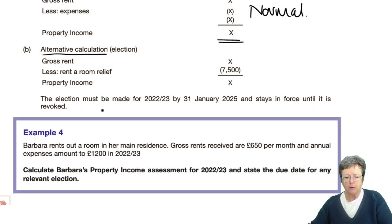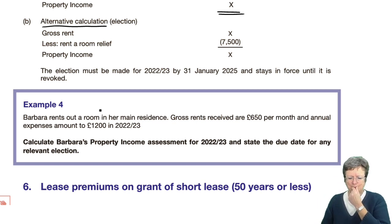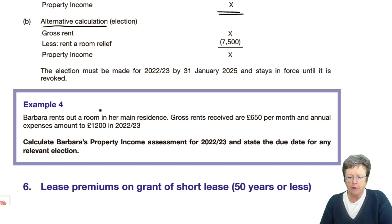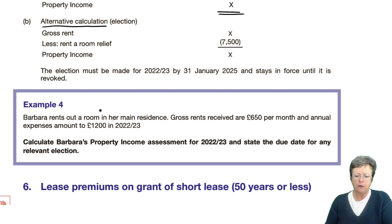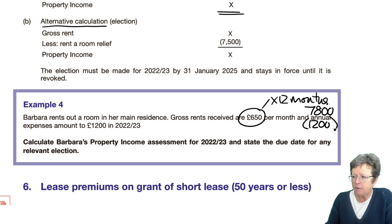Let's have a look at example number four. Barbara rents out her room in her main residence. Gross rents are £650 a month. Annual expenses amount to £1,200. So £650 a month times 12 months equals £7,800. If we do the normal calculation, we'll just take the expenses off, which would give us £6,600. So that's the normal one.